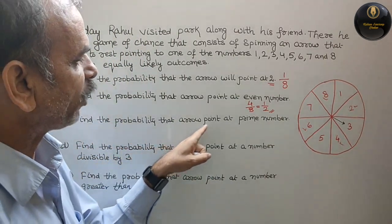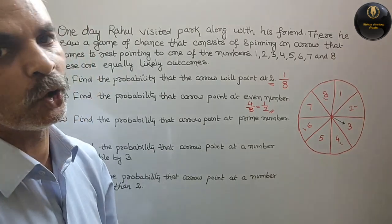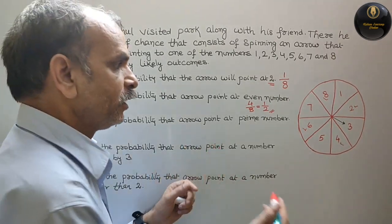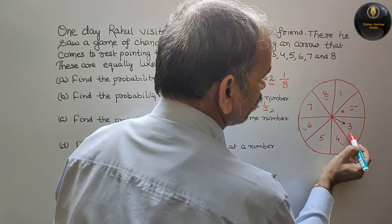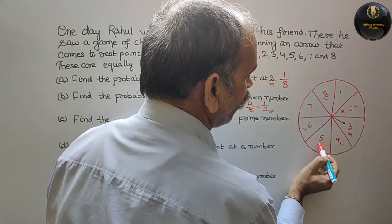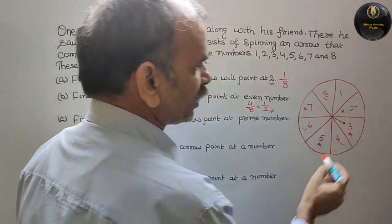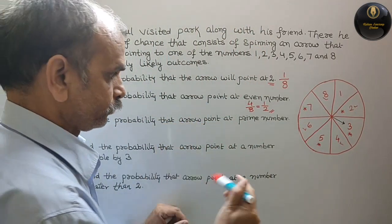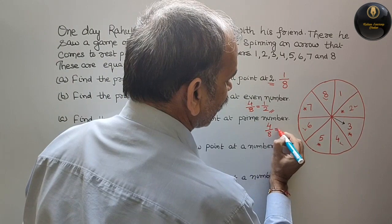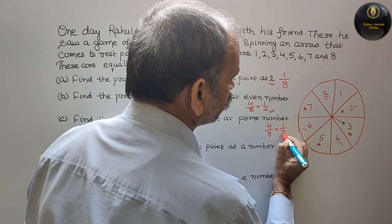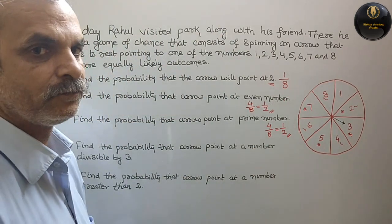Next. Find the probability that arrow points at prime number. Prime numbers among these are: first is 2, 3, 5 and 7. So how many are there? 4. So here we will write 4 by total is 8, that is equal to 1 by 2. 1 by 2 is your answer.